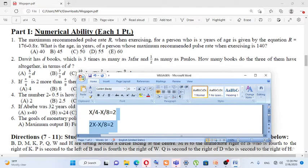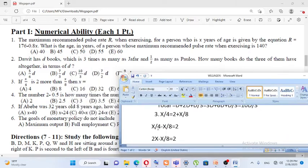So, x over 4 is equal to 2 times J. D is equal to 6 times J. So, the answer is C, 16.